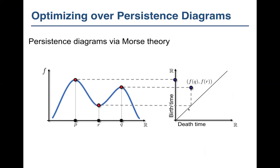One of the key features of this work is that we optimize over persistence diagrams. We started with something very discrete — topological information — and made it more continuous by introducing this function. But we have to remember that the output is a persistence diagram, which is again something very discrete. We need some way of going back from this persistence diagram, this set of points in the plane, back to our original space and our original function.